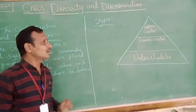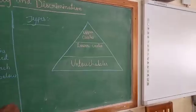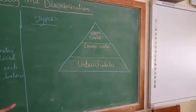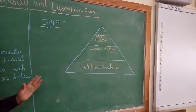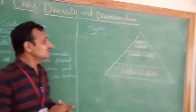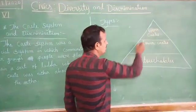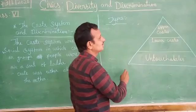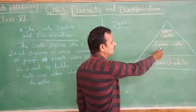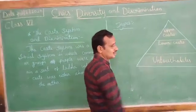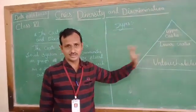Let us go to the next topic: the types of the caste system. There are many castes in India, but the castes are mainly divided into three groups. Those are: upper caste, lower caste, and untouchable.